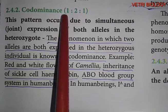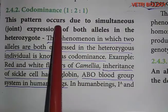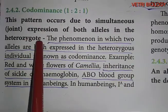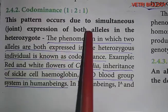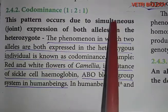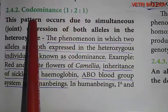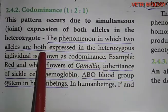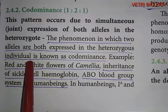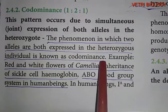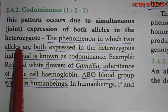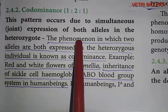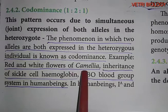The next topic is co-dominance. Its ratio is 1:2:1. This pattern occurs due to the simultaneous expression of both alleles in the heterozygote. The phenomenon in which two alleles are both expressed in the heterozygous individual is known as co-dominance.